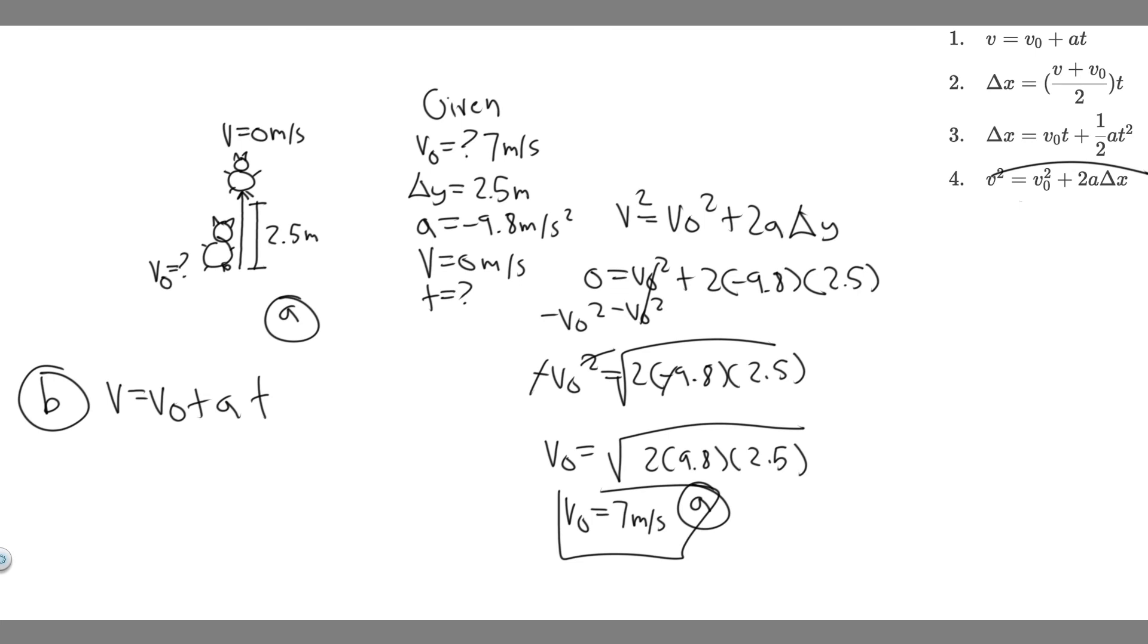So all you want to do is just plug in. So v we know is 0 equals v sub 0, which is 7, plus a, which is minus 9.8. So 7 plus a negative is still negative. So 7 minus 9.8t minus 7 from both sides.